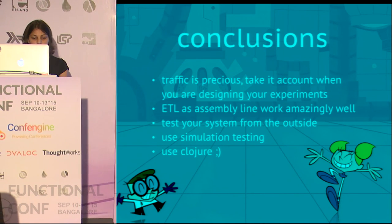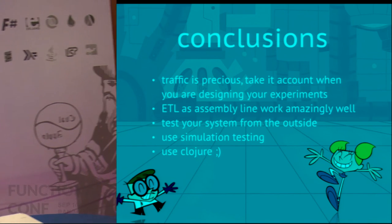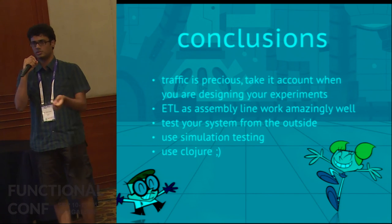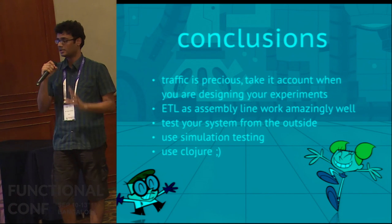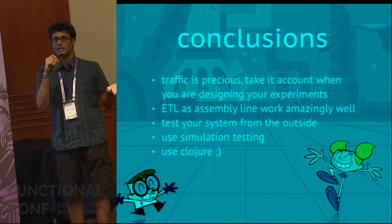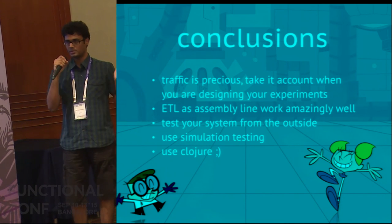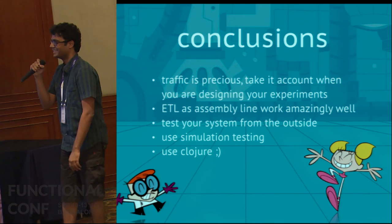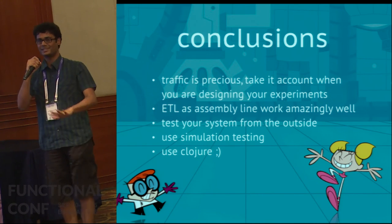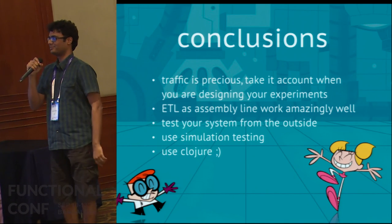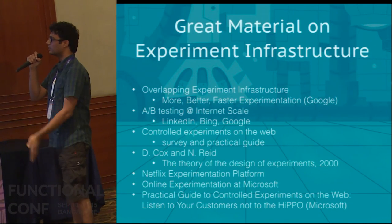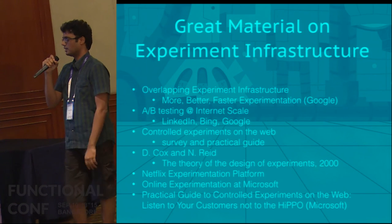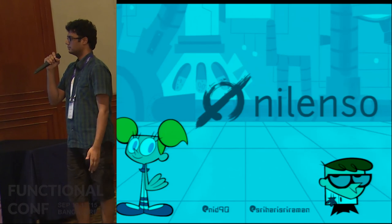In conclusion: traffic is precious — I've said it four times now. Keep that in mind; it's not just us or Staples, it's Google, it's everyone doing experimentation. You can build assembly lines in Clojure really well, and you should use that — ETL is a good example of where you can use it. Test your system from the outside using simulation testing. And yes, use Clojure. Here are some really good papers and books that we went through — these will remain on the slides and we'll put them up somewhere for you to go through later. That's it. Thanks.